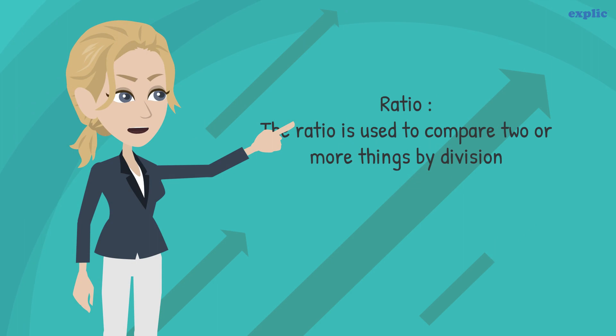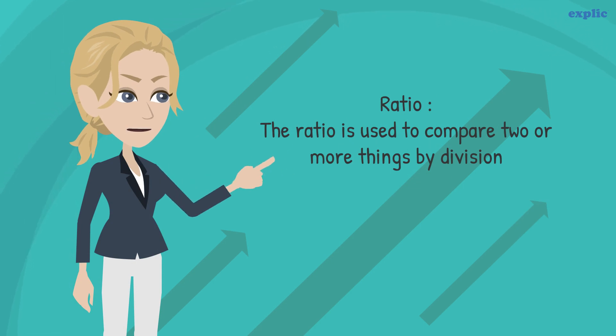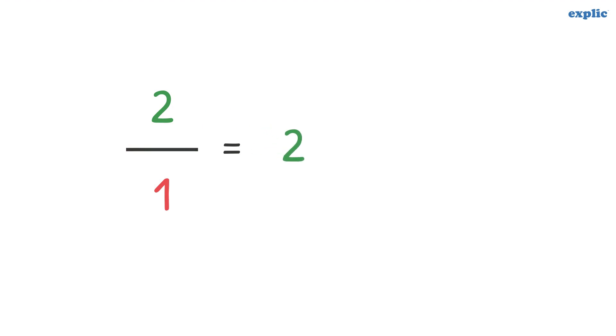The ratio is used to compare two or more things by division. Ratio can also be written as 2 colon 1, which is read as 2 to 1.